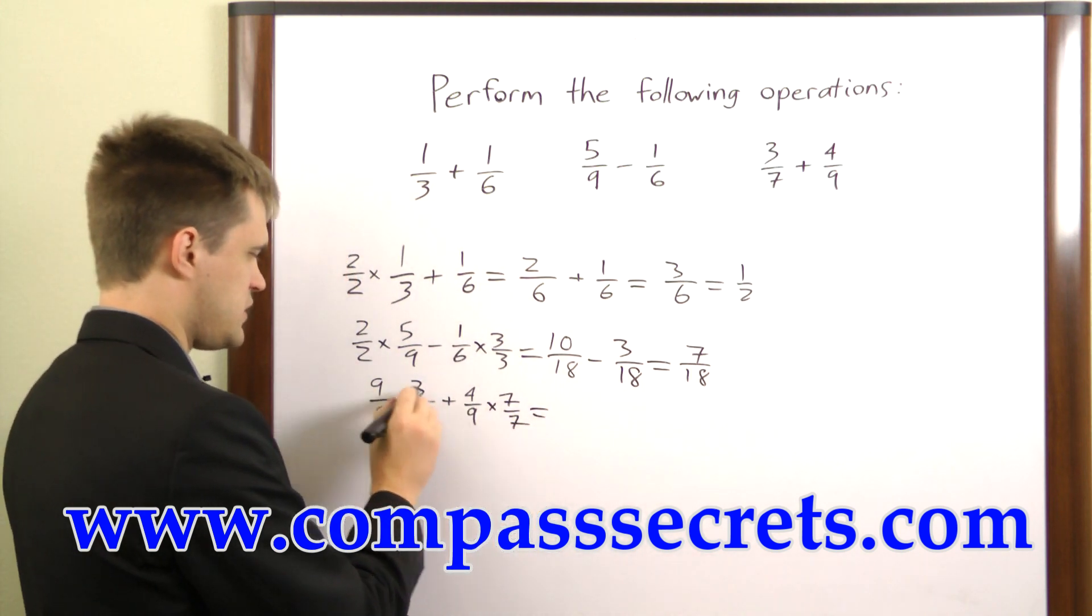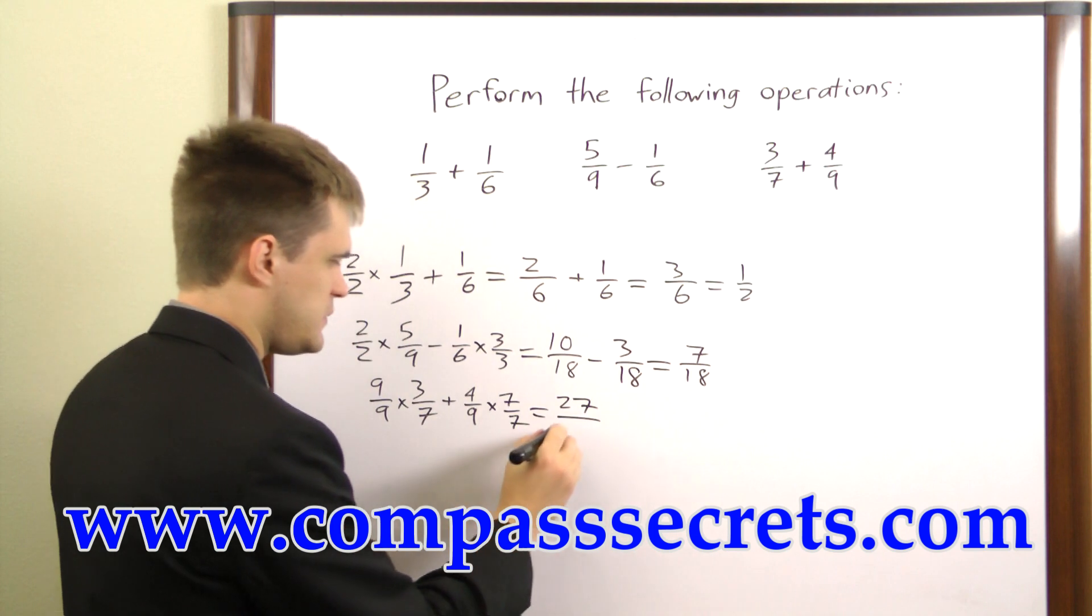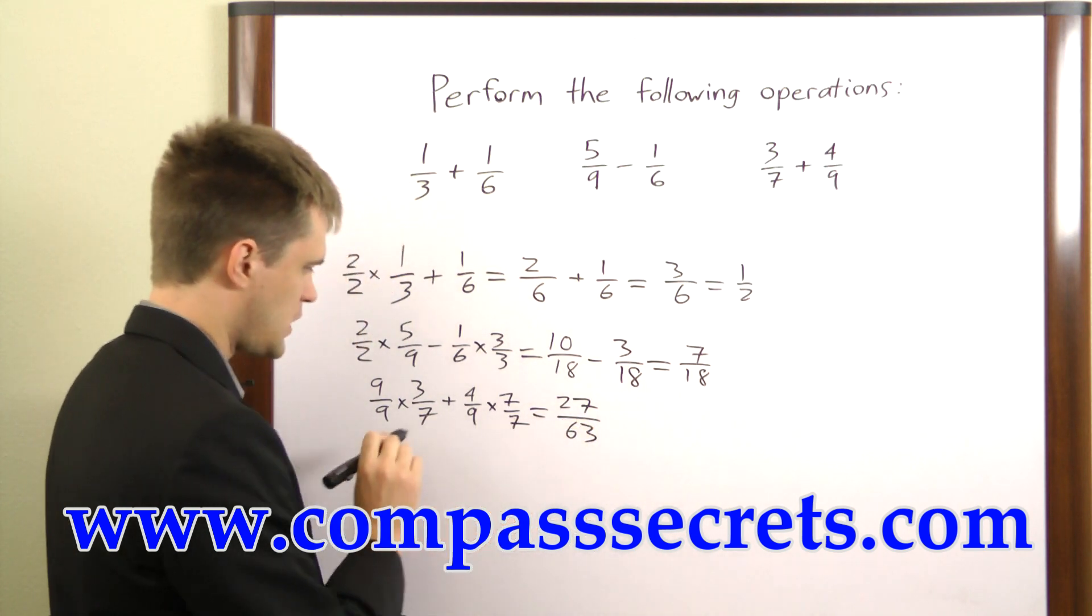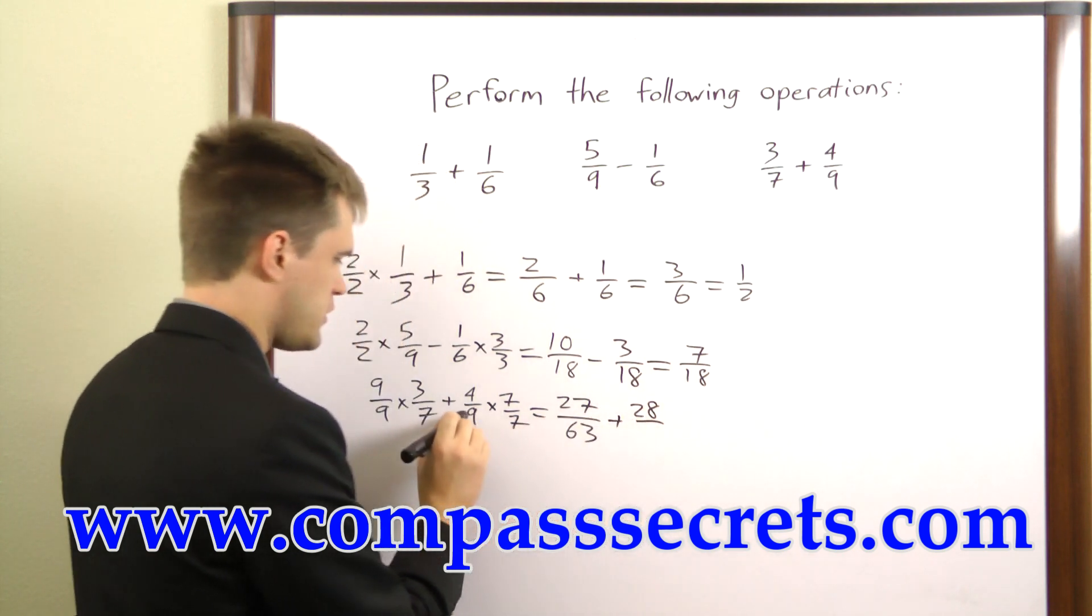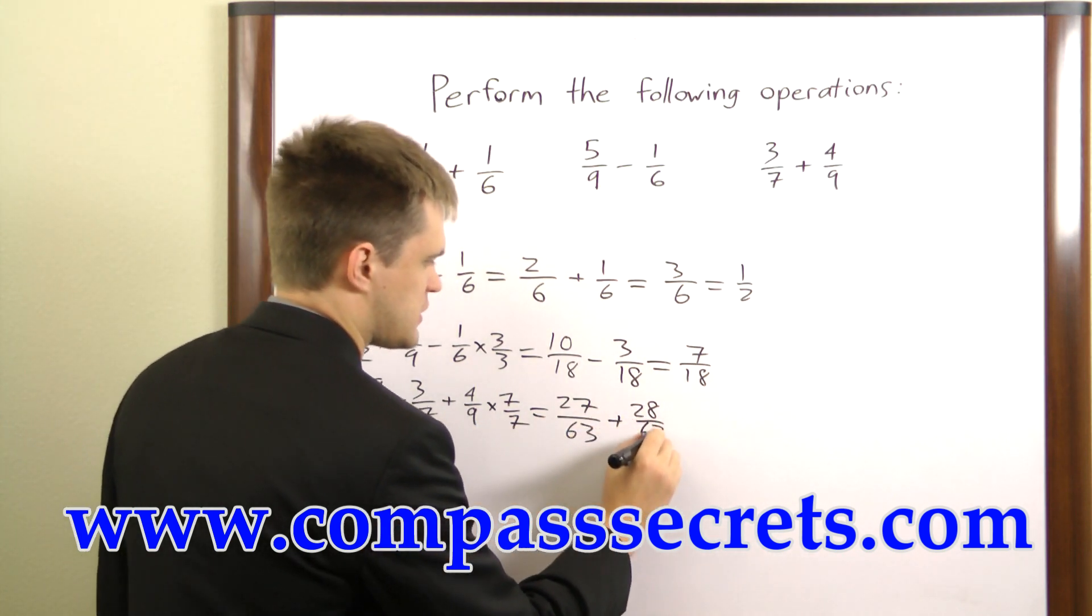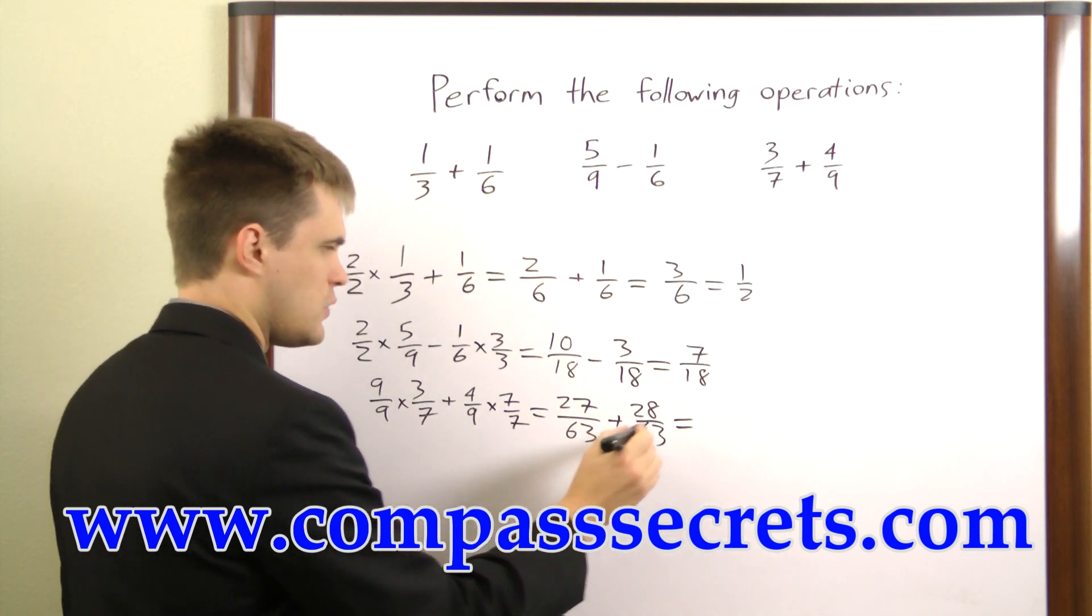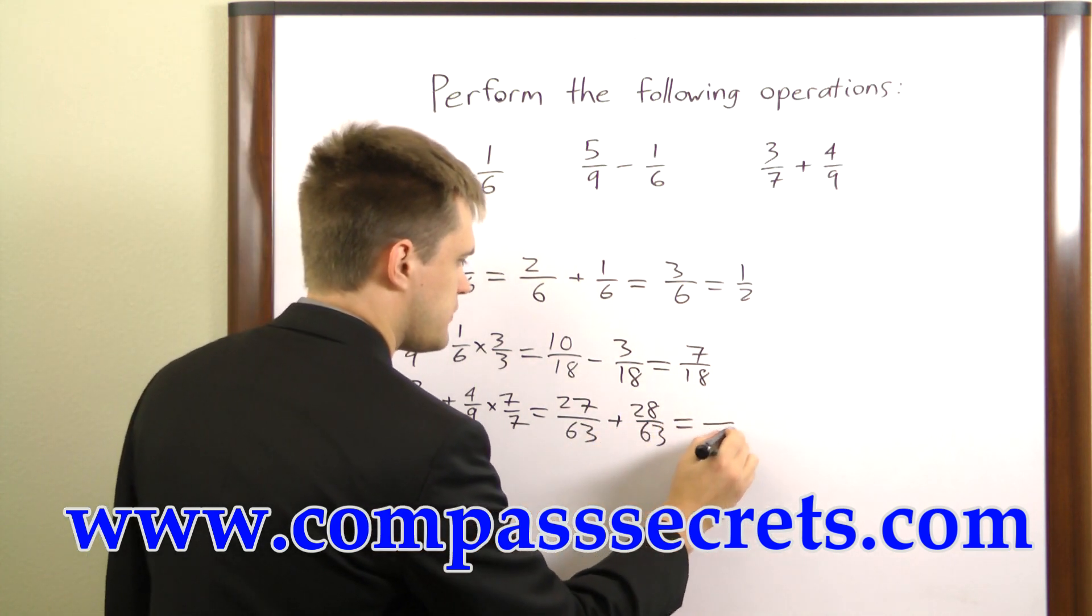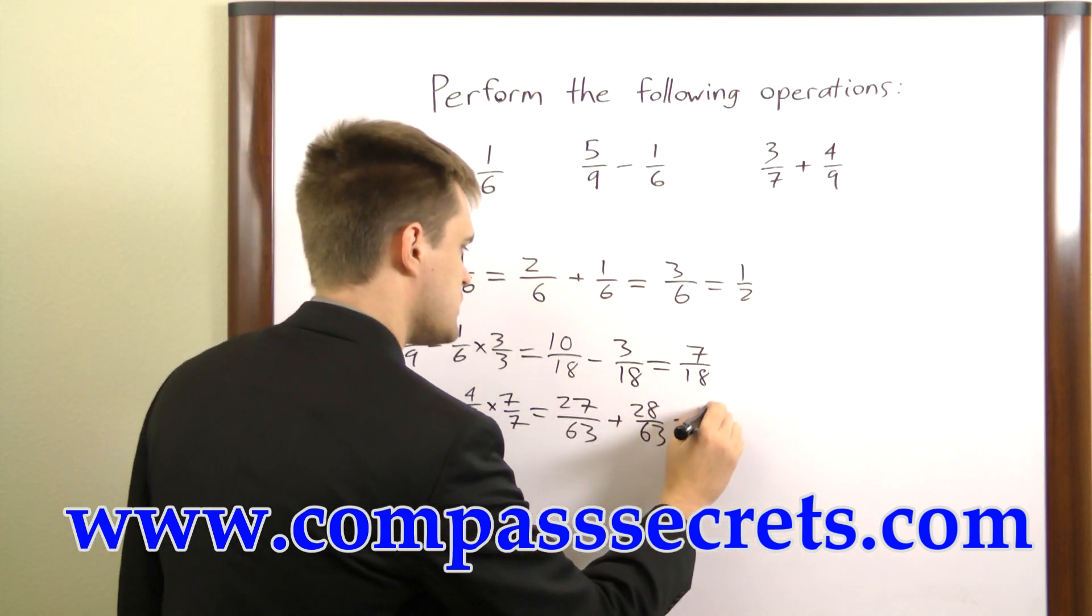Then that gives us 9 times 3 is 27, over 9 times 7, 63, plus 4 times 7 is 28, over 9 times 7, 63. Now we can just add these two fractions. We keep the 63 in the denominator, and we add 27 and 28, which is 55.